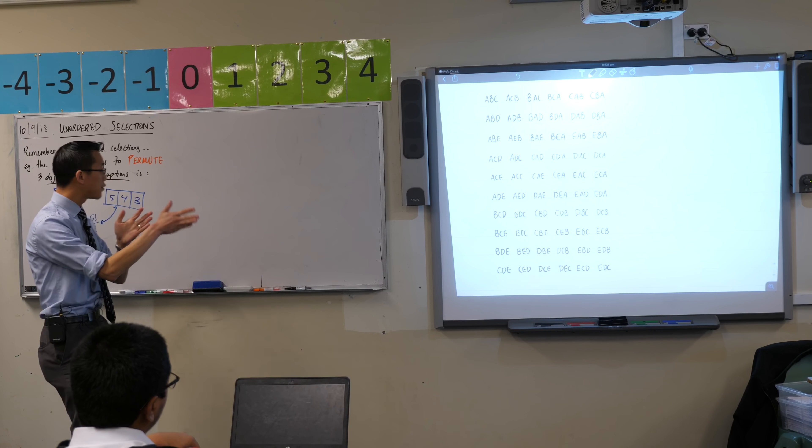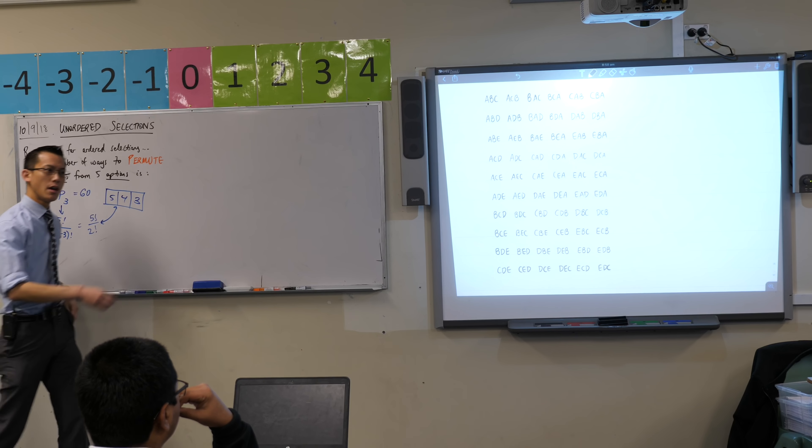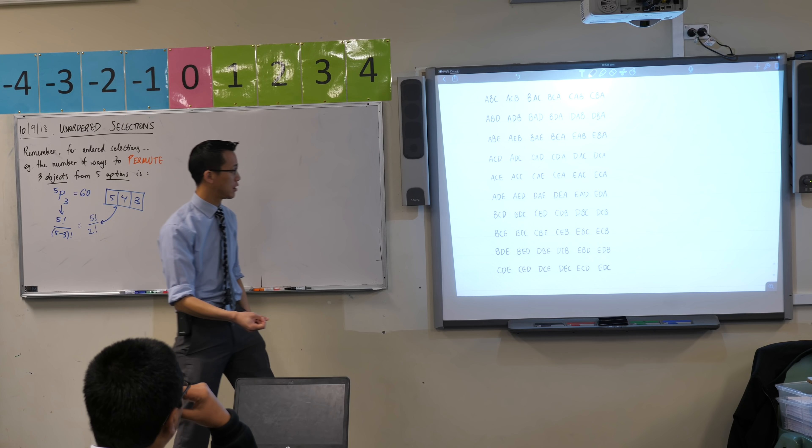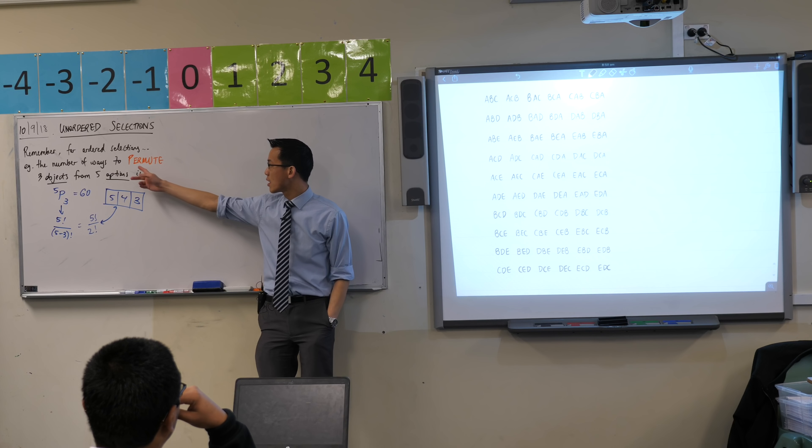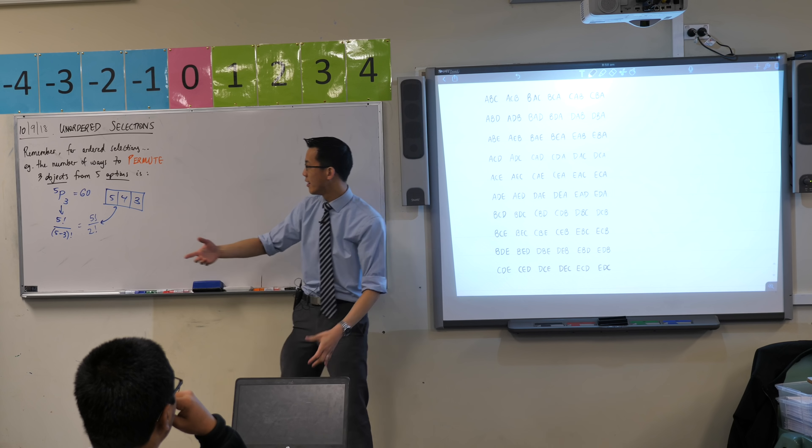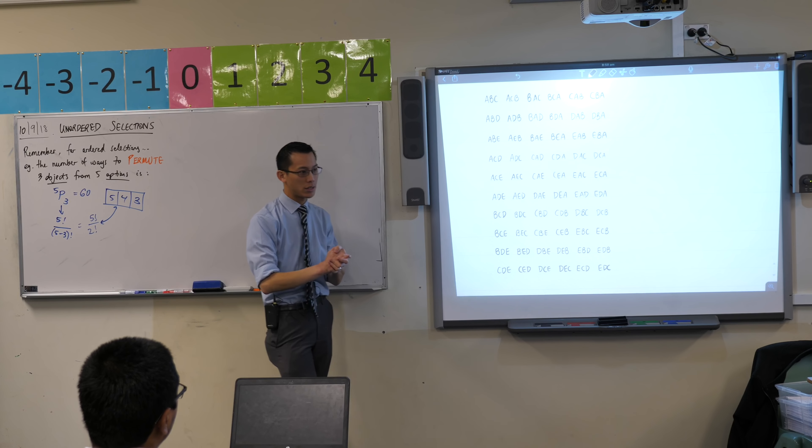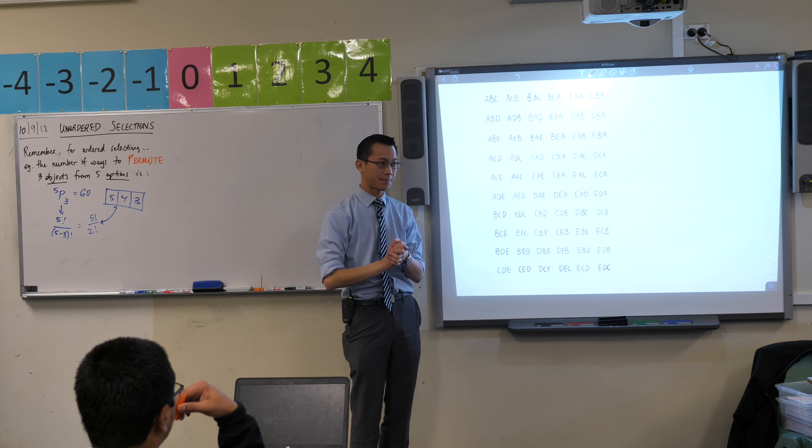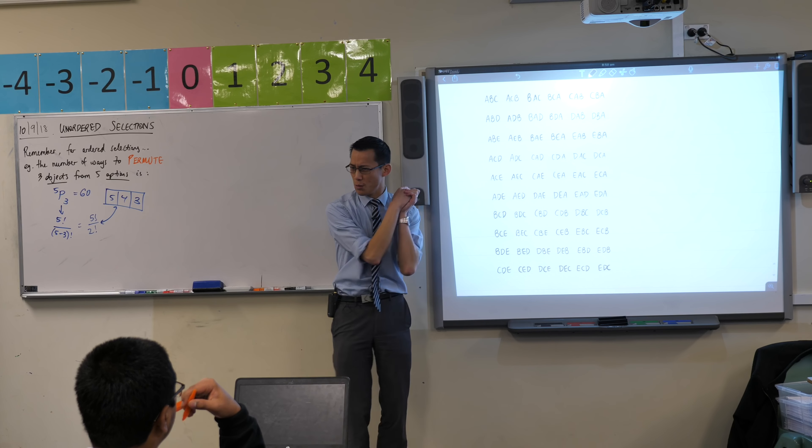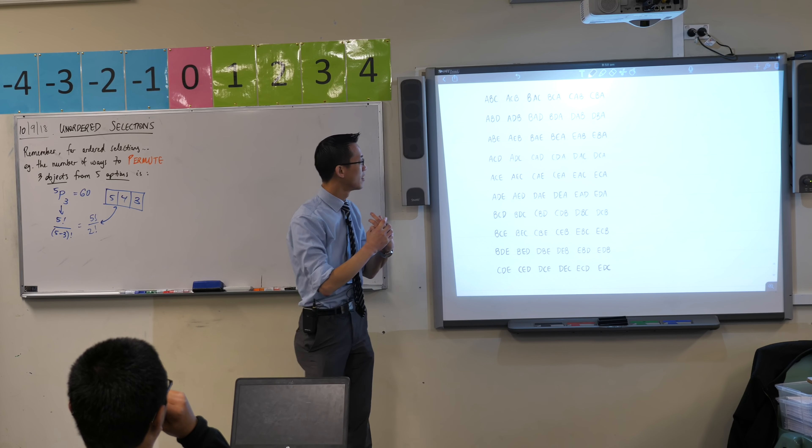Now I want to use this as an avenue for understanding not ordered selections but unordered selections. Suppose I reframed this question and said, how many ways can I just choose, not permute, not arrange, but just pick out three of those objects from the five options? What if order didn't matter?